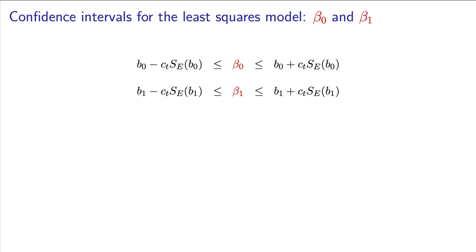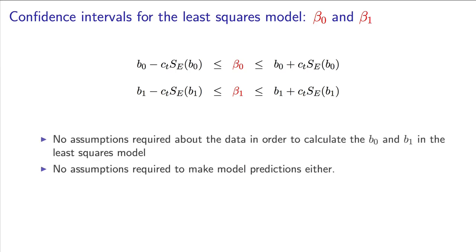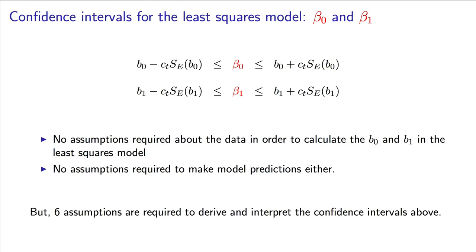Up to now, in the least squares model, we have not had to assume anything about our raw data. The x and y values could have come from any distribution. We will make a few assumptions about our model now, and its structure, in order to construct these confidence intervals. If we don't need the confidence intervals, these assumptions are not required.